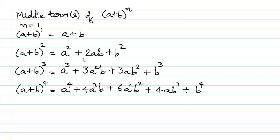If we are asked to find the middle term or middle terms: in the case n=2, 2ab is the middle term; in the case n=3, there are two middle terms — 3a²b and 3ab². In the case n=4, there is just one middle term: 6a²b². Similarly, for n=1, there are two middle terms: a and b.